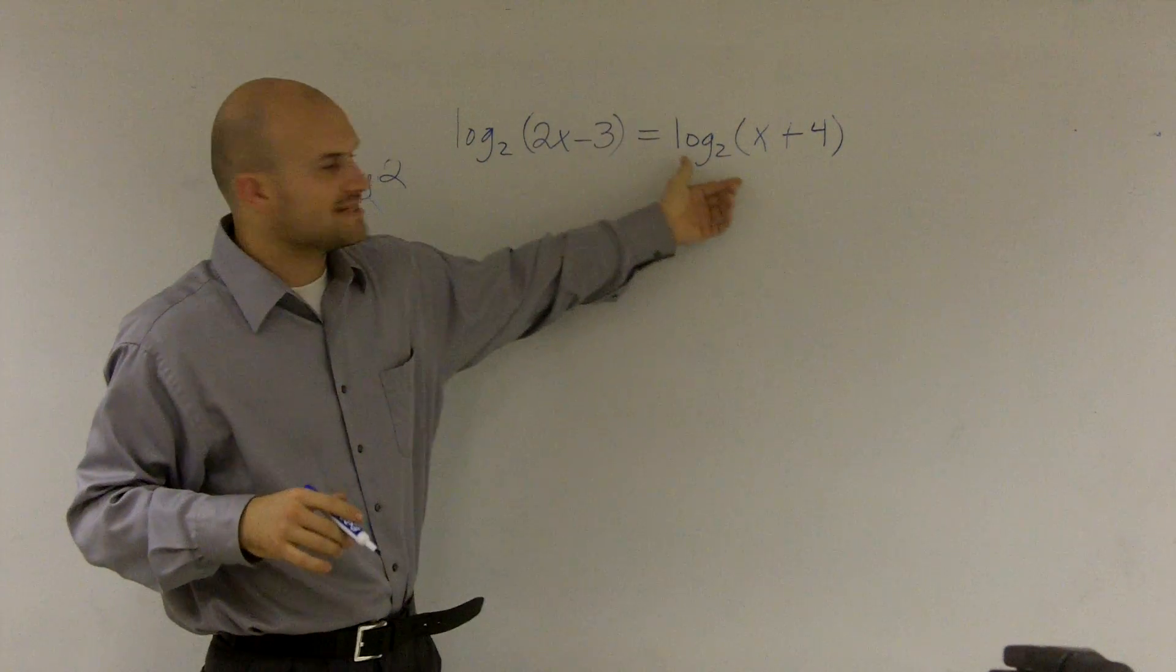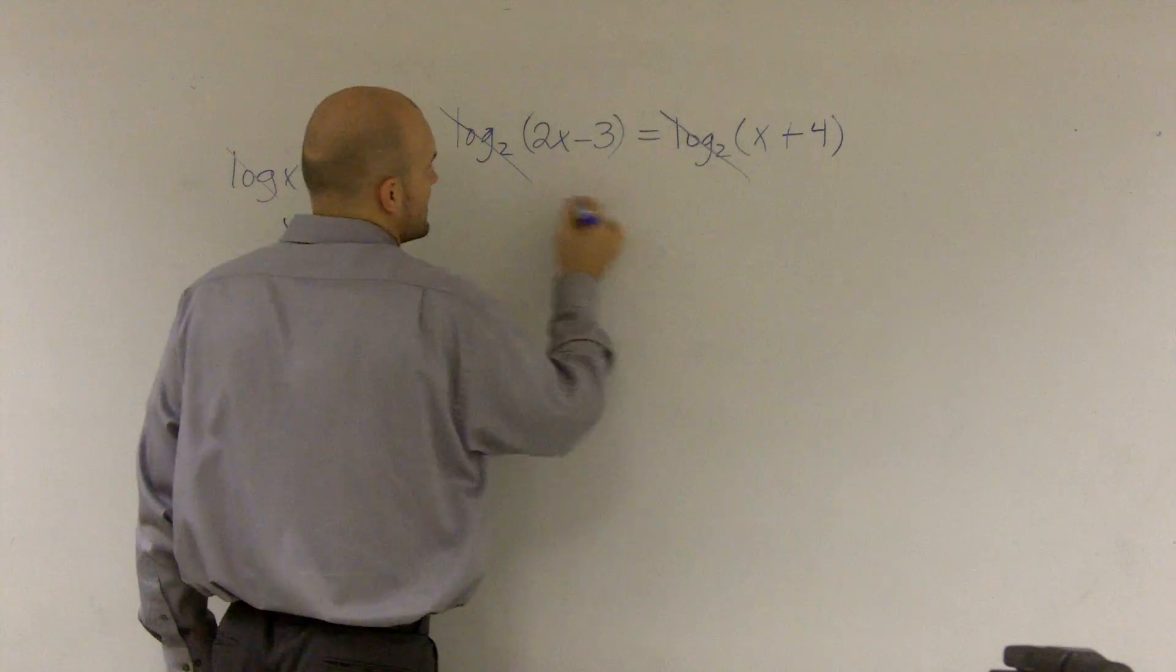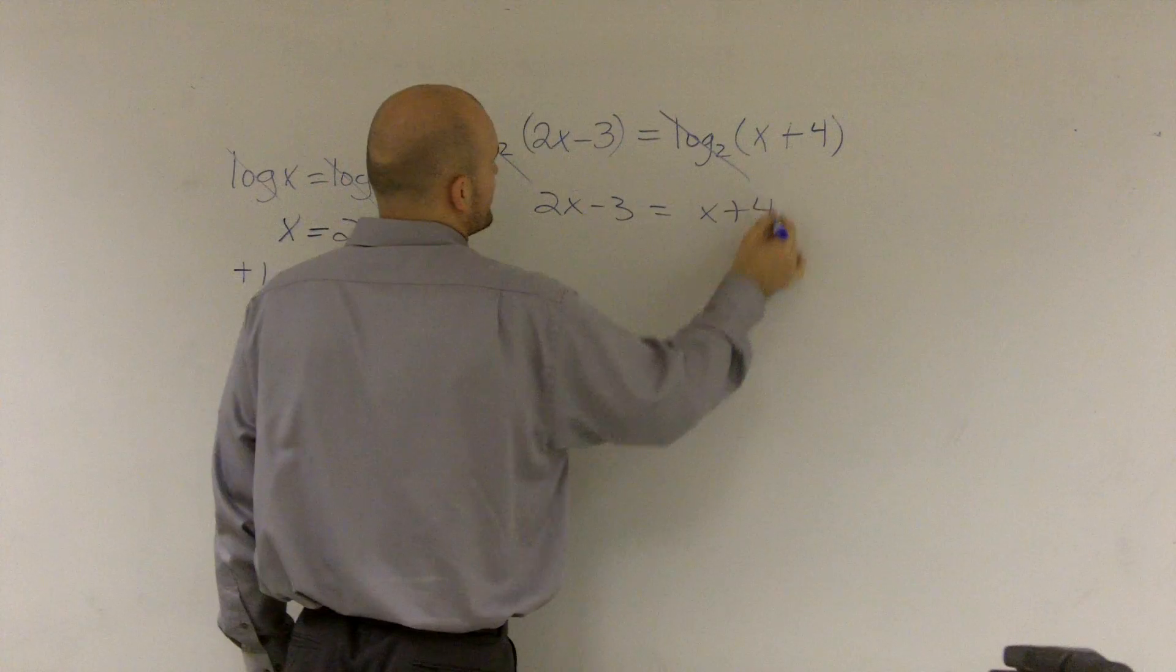So here, I have a log base 2 is equal to a log base 2. I can now cancel these out and just say 2x minus 3 is equal to x plus 4.